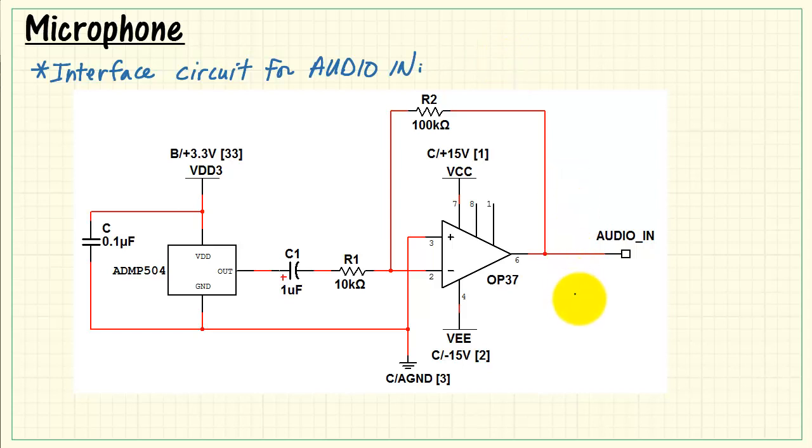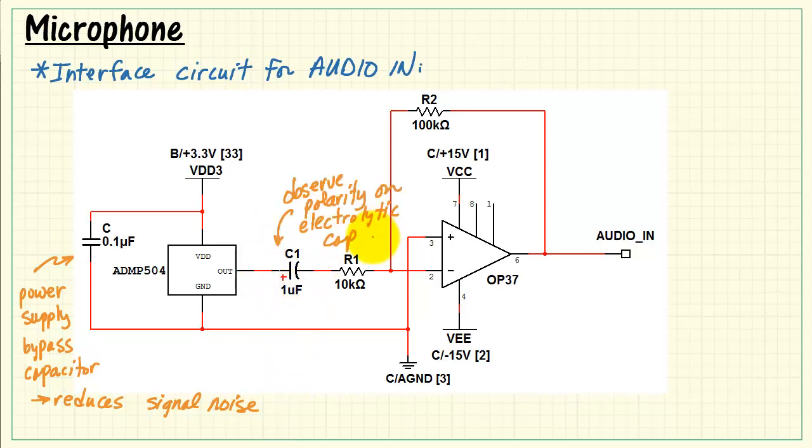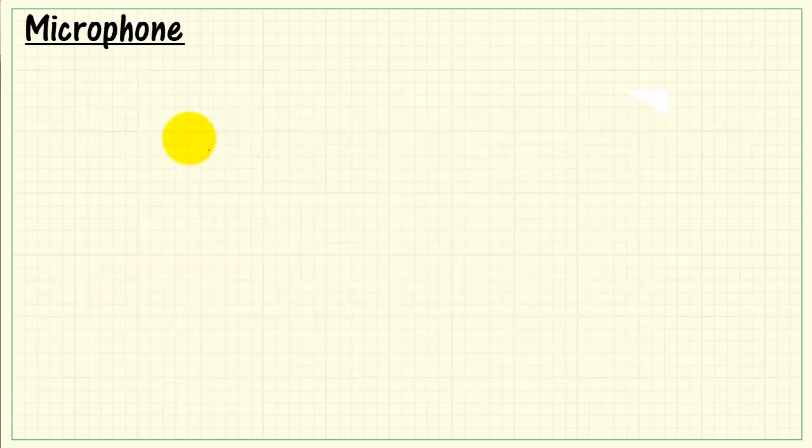Alright, here's the completed circuit for the audio in interface. I'm making use of the dual power supplies on the MSP or C connector. The datasheet for the ADMP504 recommends a 0.1 microfarad power supply bypass capacitor to reduce signal noise. Also, I'll note that the 1 microfarad capacitor, you want to make sure you're observing the polarity on that device. And again, we're using the OP37 dual supply op amp in this case.